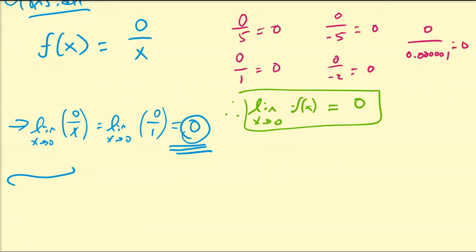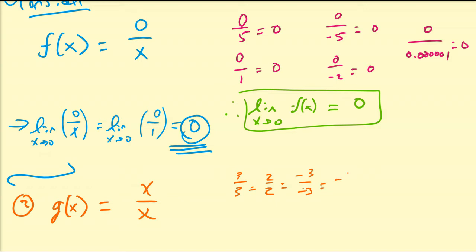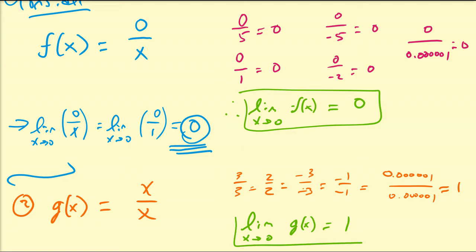But we're going to approach this from a different angle as well. Consider the function g(x) = x/x. If we plug in a bunch of values — 3/3, 2/2, negative 3 over negative 3, negative 1 over negative 1, and really, really small numbers — all of these are also going to be equal to 1. So as x gets really close to zero of this function, all the values are getting close to 1. Both of these functions are approaching zero divided by zero, but they're approaching different values, and that's a problem.